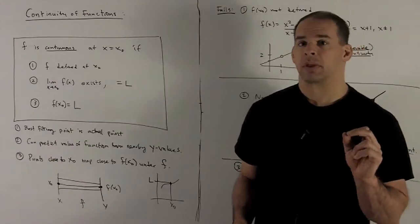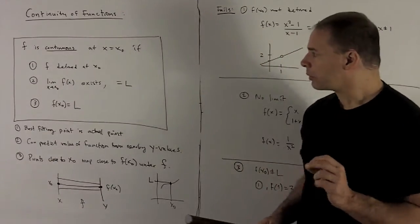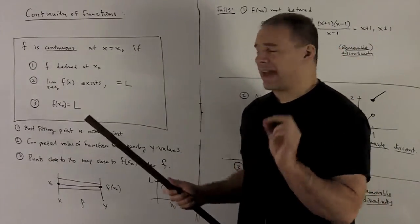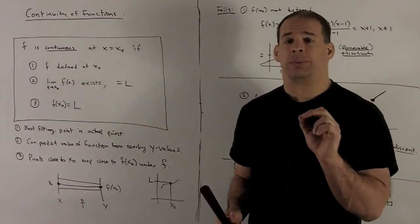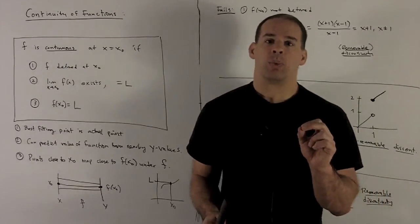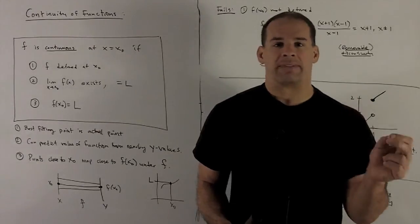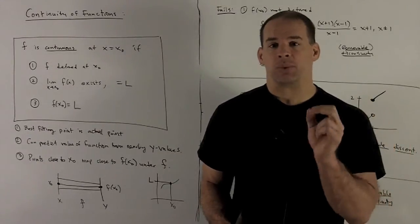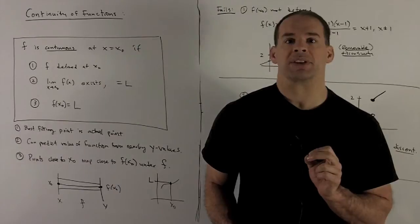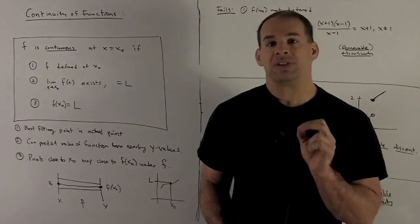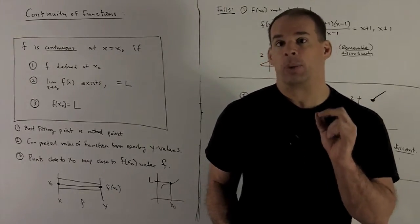So what's the idea here? Three ways to think of this. Well, if I have the limit equal to the actual value of the function, what we're saying is you take your best fitting point, pick the y value, that's going to be actually equal to what the function told you in the first place. So what it means is you're starting out with your best fitting point.